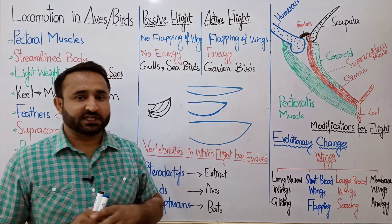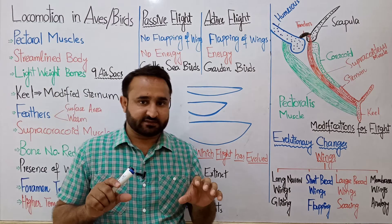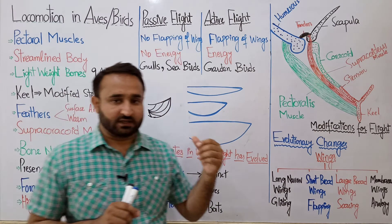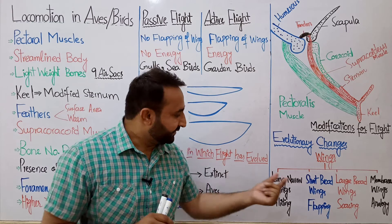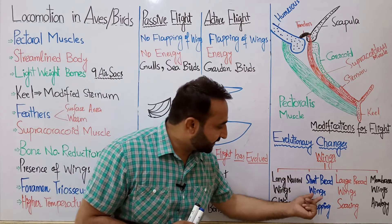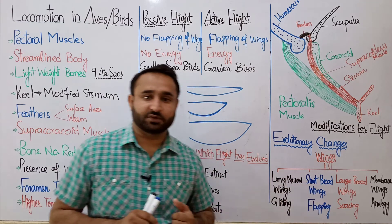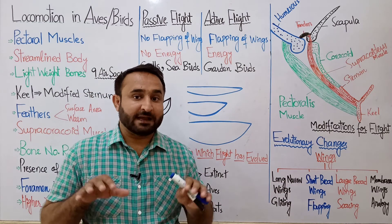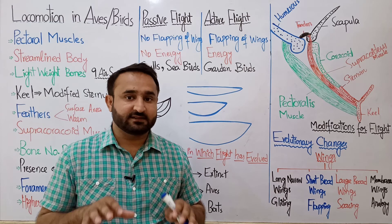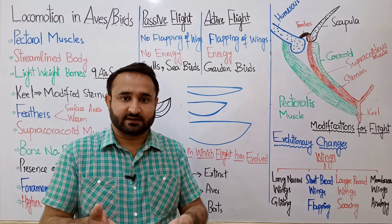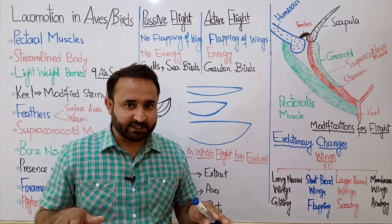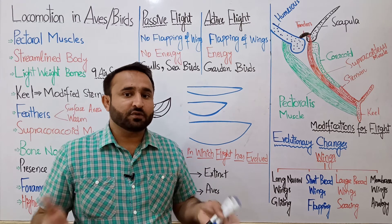Active flight में garden birds होते हैं — छोटे जिनके short broad wings होते हैं। इन्हें continuously flapping of wings करनी पड़ती है, क्योंके इनके wings छोटे हैं।